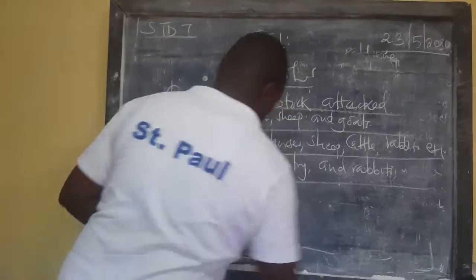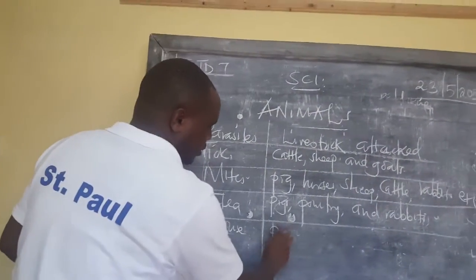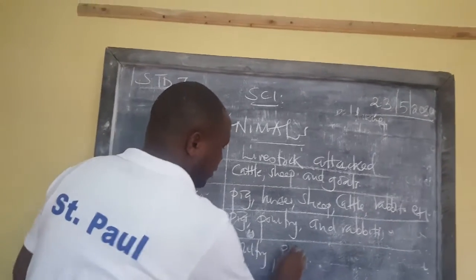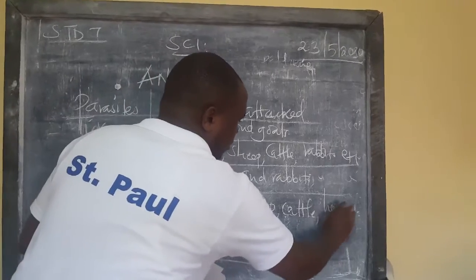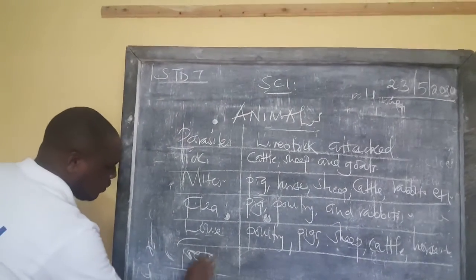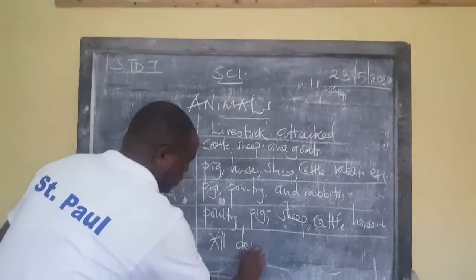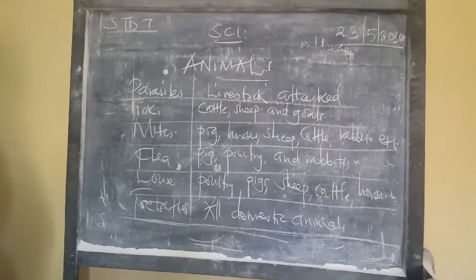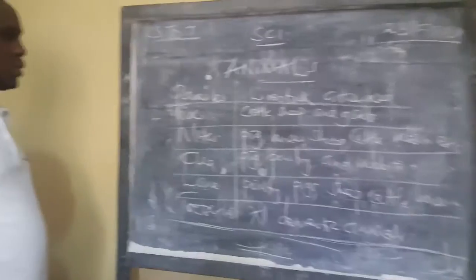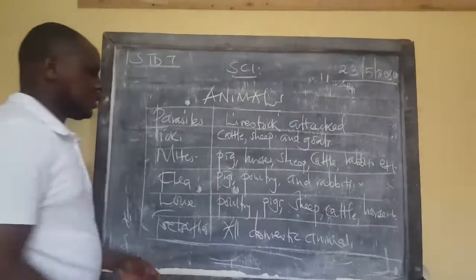Lice — and their young ones are called nits — are found in poultry, pigs, sheep, cattle, and horses. Finally, tsetse flies attack all domestic animals: cows, goats, sheep, and all others. This is very important because it is a question that comes in the exam. This table shows each parasite and the animals attacked by it.